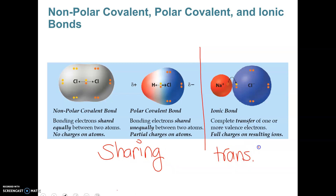In ionic bonding, one thing sort of steals electrons from the other. With sharing, it could either be even sharing — sometimes just called a covalent bond, or a non-polar covalent bond — meaning both atoms are sharing the electrons evenly.